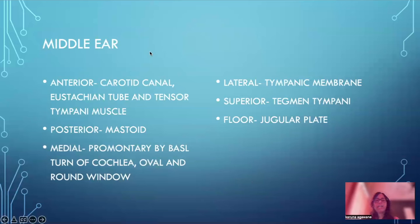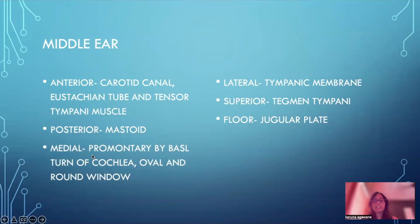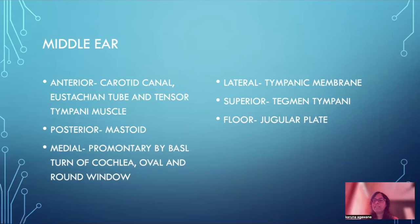The middle ear has six walls. Anteriorly it is formed by the carotid canal with a bony separation between the internal carotid artery and the middle ear. The antero-inferior wall contains the opening of the Eustachian tube and attachment of the tensor tympani muscle. The posterior wall is formed by the mastoid and mastoid air cells. Medially, there is a bony bulge called the promontory formed by the basal turn of the cochlea, and the oval and round windows are also visible on the medial wall. Laterally it is limited by the tympanic membrane. Superiorly, the roof is formed by the bone called the tegmen tympani which separates it from the middle cranial fossa, and the floor is formed by the jugular plate, below which we have the internal jugular vein.